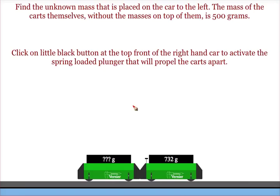Okay, to find the mass that is placed on top of this Vernier collision cart, we should realize that each cart starts out with a mass of 500 grams before we place any of the masses on top.